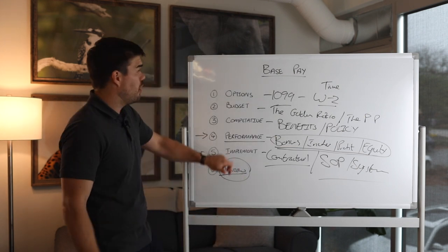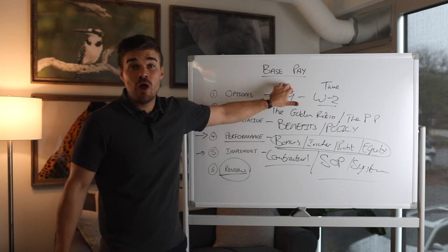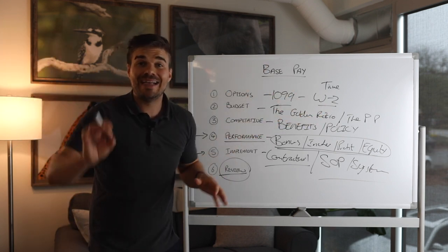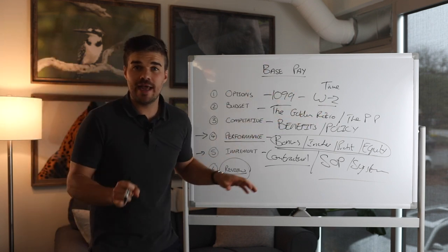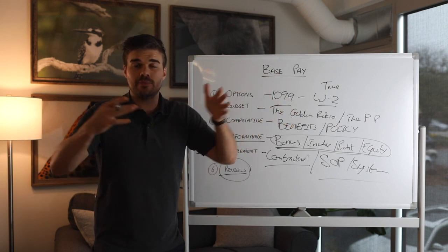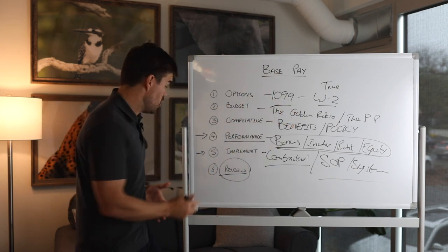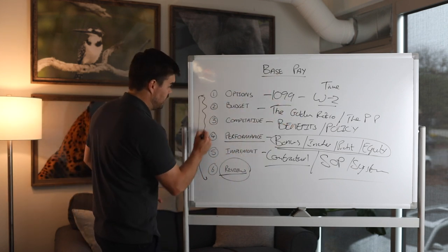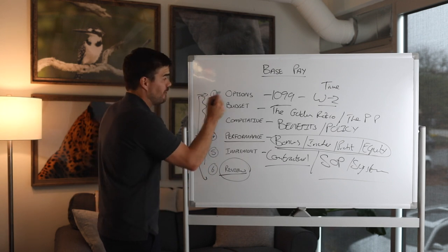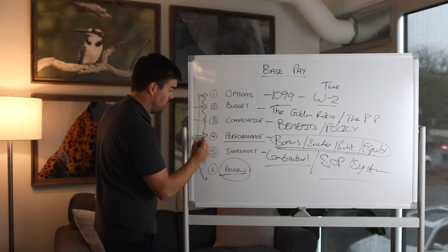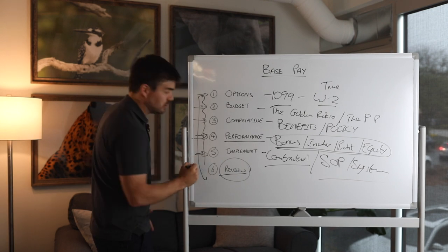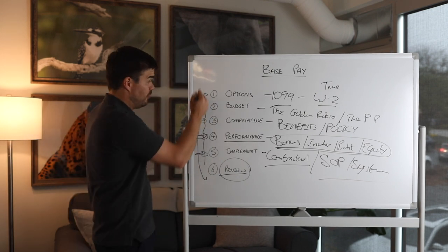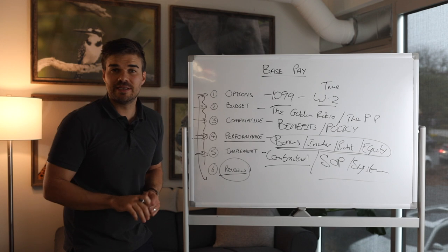And then lastly, reviews. If you are on a 1099, we advocate to everyone a 90-day review process. So every 90 days, you have a review, check your outcomes, what's happened, do we need to adjust this contract? Do we need to go back and look at all these points? Are we still on the right option? Are we still within budget? Are we still being competitive? Are we still incentivizing our performance? Are we still implementing the right thing? If we need to review that, we can change it and implement something new.